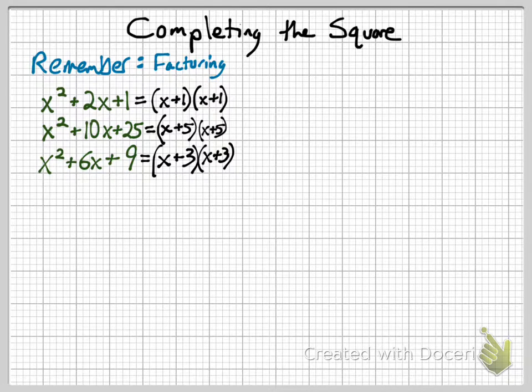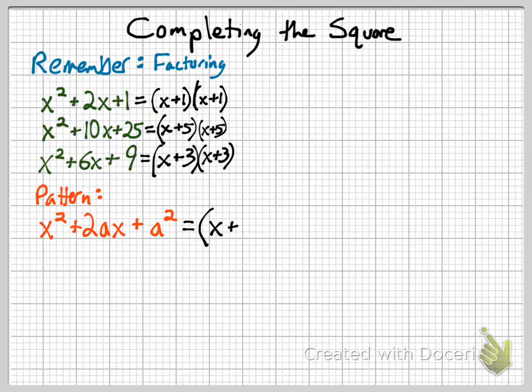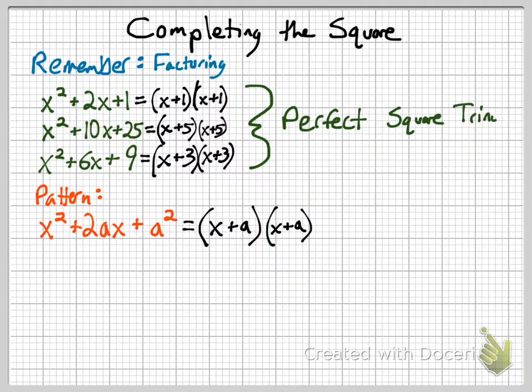And we're able to do this because the last term is the square of the number, and the middle term is two times the number. So if we have this pattern, 2a is in the middle and a² is at the end. Just a reminder, that's what it looks like, and we call these perfect square trinomials because they are a binomial squared.